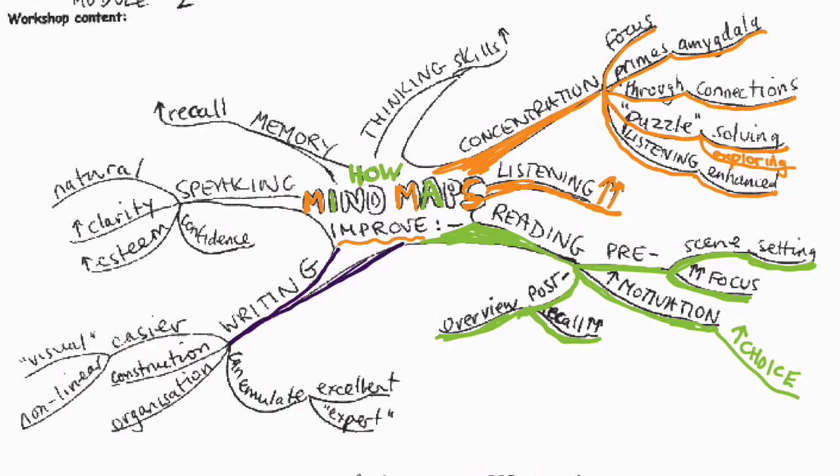Mind mapping also improves writing in several different ways. One is it makes it much easier for them to emulate excellence. Another one is that it improves writing organization and also the organizational construction of sentences and of paragraphs. It's much easier to write, particularly from the planning aspect of writing, when you have a non-linear approach. When people are planning their writing with a mind map, they don't have to start at the beginning and work through to the end. They can start in the middle if they want and then do the end and then do the beginning.